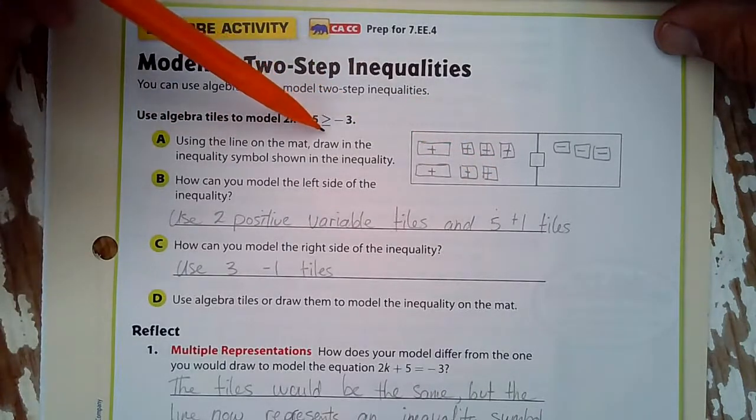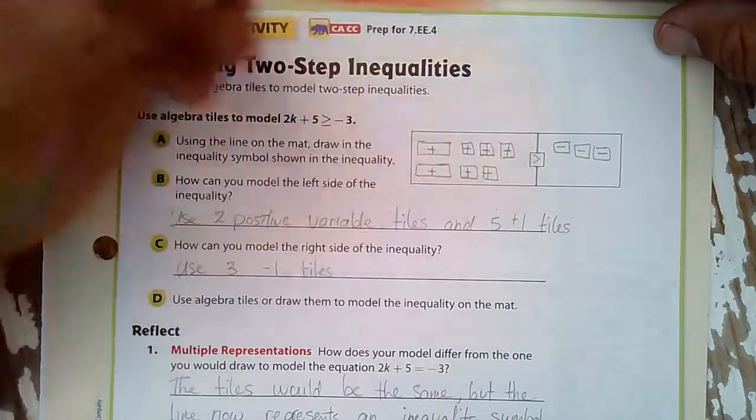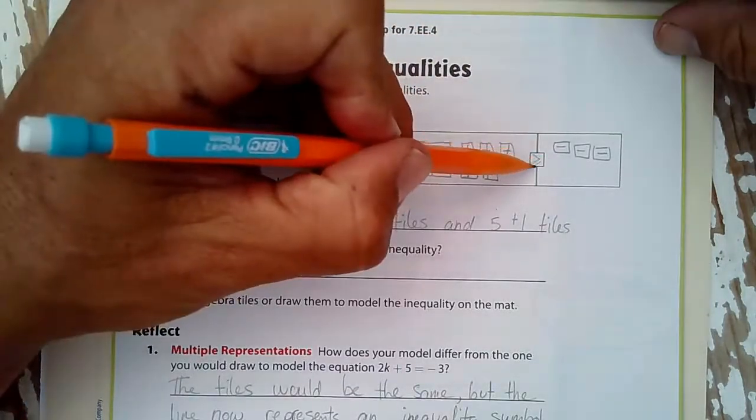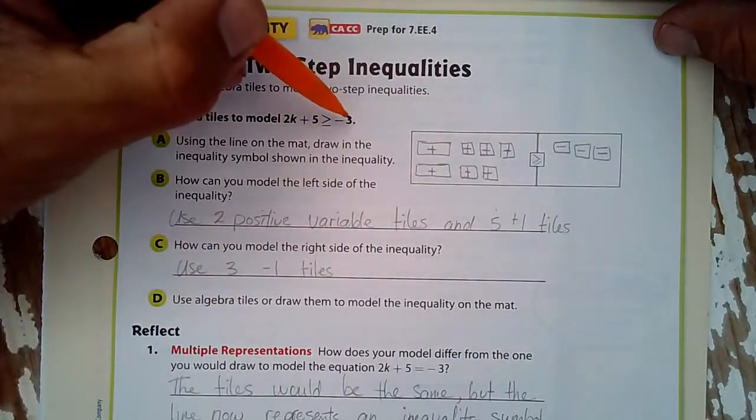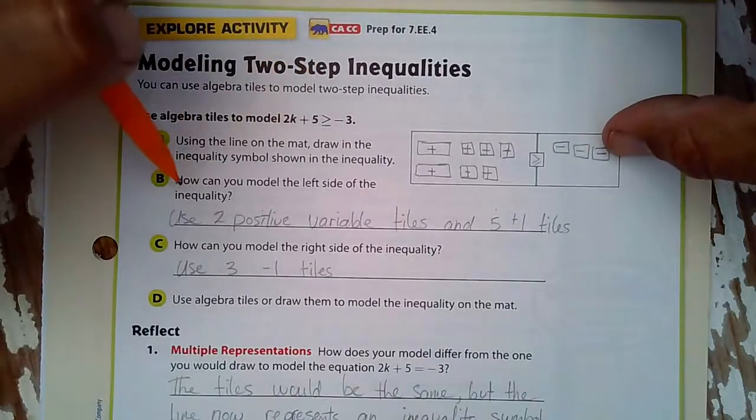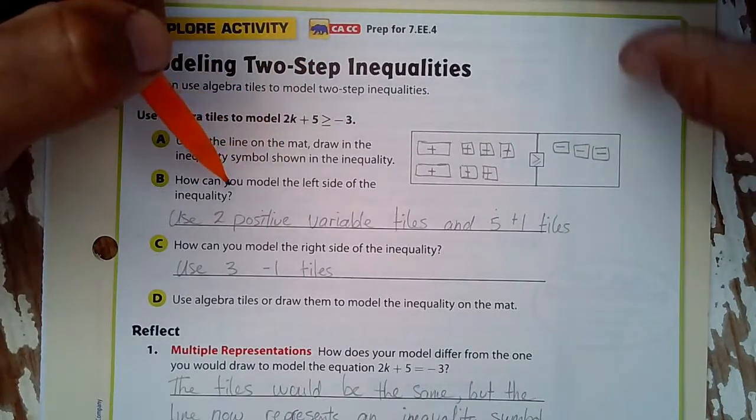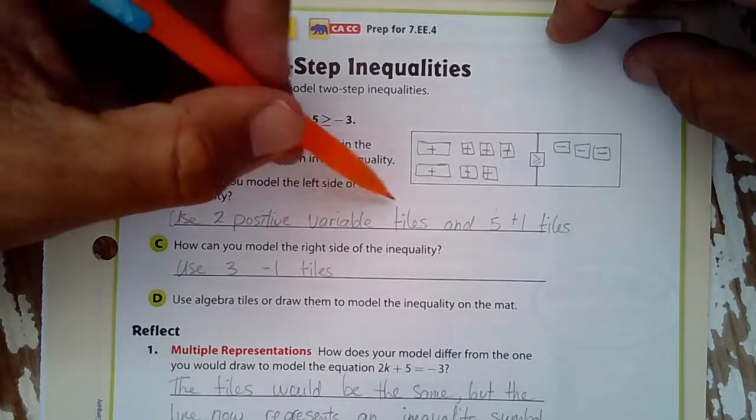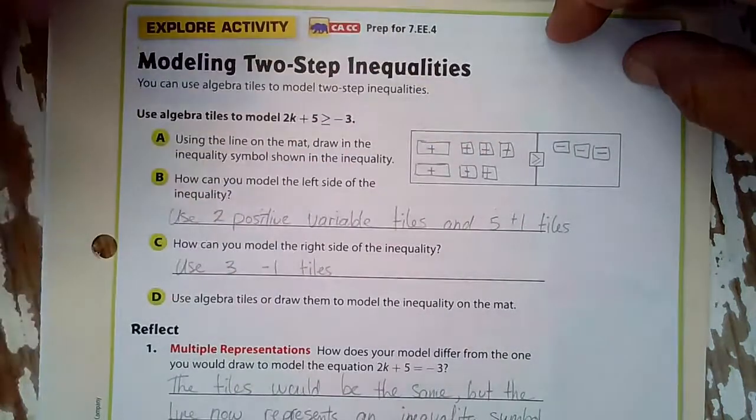Is greater than or equal to negative 3. So negative 3. How can you model the left side of the inequality? Two positive variable tiles. Okay, done. And five positive one variable tiles. Done.